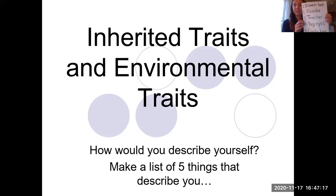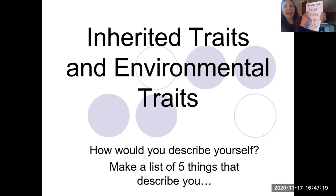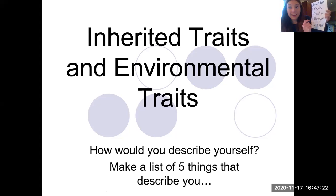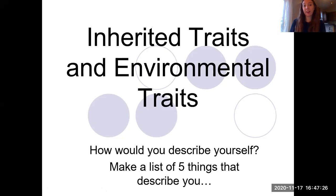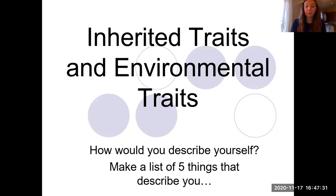Here's my list. I have brown hair, reader, teacher, big eyes, and curly hair. Those are the five words that describe me. You should have five things that describe you on your sheet of paper.